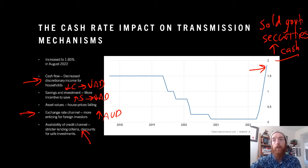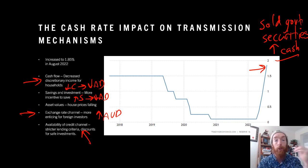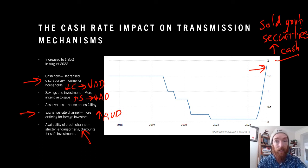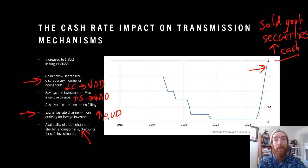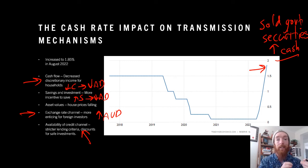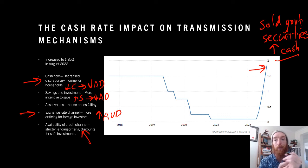With the availability of credit channel, these increased interest rates have led banks and financial institutions to have stricter lending criteria, as it's more of a risk to loan money out to people when there is less money available. It's also meant that banks have started looking to provide discounts for people who are safe investments — there was news about banks giving discounts to people who don't have much existing debt, because they're a safer investment for banks, knowing they will definitely be able to get their money back even if interest rates continue to rise.